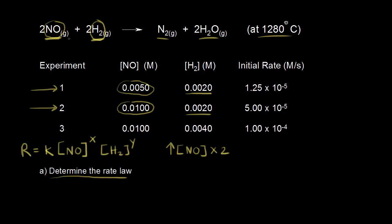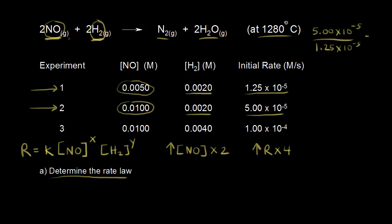We doubled the concentration of nitric oxide. What happened to the initial rate of reaction? The rate went from 1.25×10⁻⁵ to 5×10⁻⁵, so the rate increased by a factor of four. If you divide 5×10⁻⁵ by 1.25×10⁻⁵, you get four — so this rate is four times the first rate.